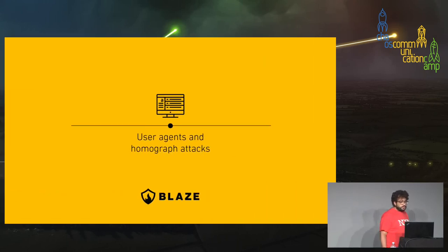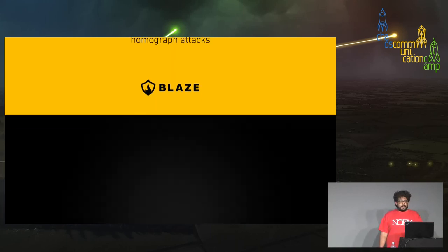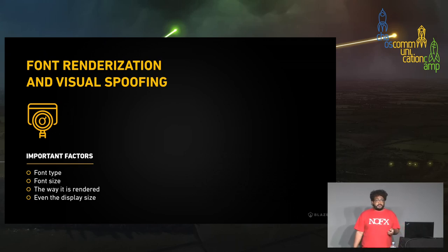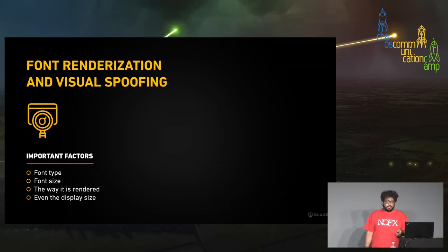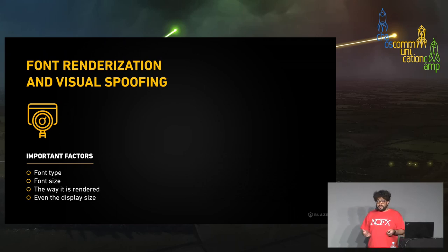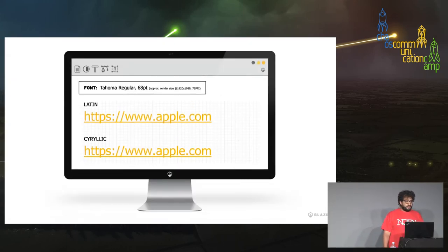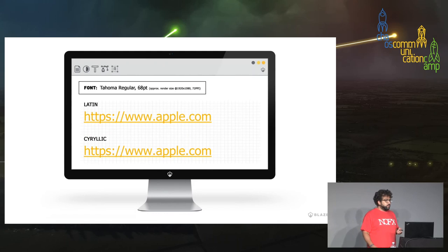Now speaking about user agents and homograph attacks — font rendering and visual spoofing. These attacks happen largely because of how the font is rendered on the display. Display size and font size all play a role in fooling users into believing a domain they are visiting is legitimate. Using Tahoma 68-point font, the Latin apple.com and a version of Apple written with Cyrillic confusable characters are absolutely indistinguishable visually.